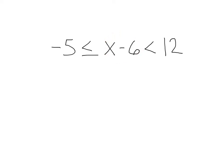If we want to get x by itself, we have to add 6. Now, this is the difference with these types. We also want to add 6 to the left side, and we want to add 6 to the right side. So, whatever you do in the middle, you have to do to both sides of the inequality. That's going to leave us with 1 is less than or equal to x is less than 18. Or, we could read this, x is in between 1 and 18.